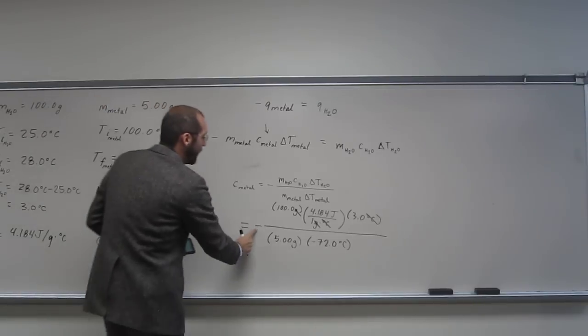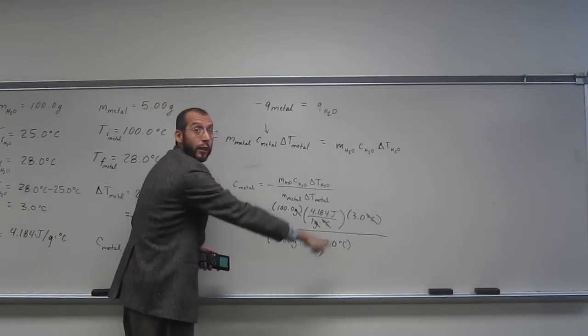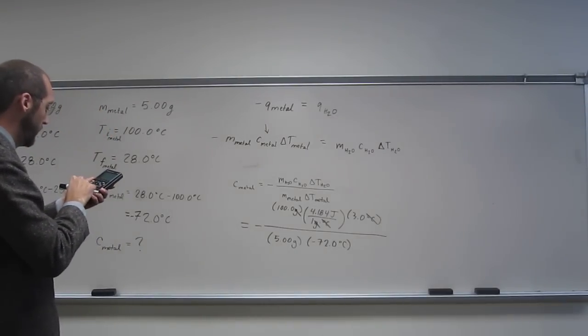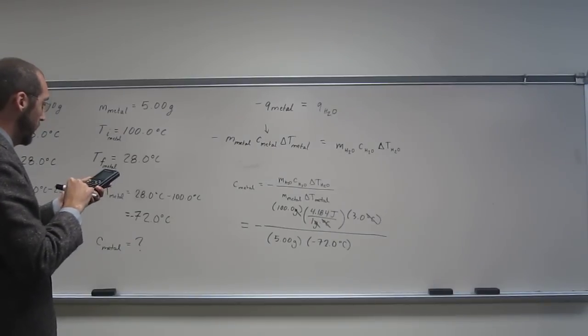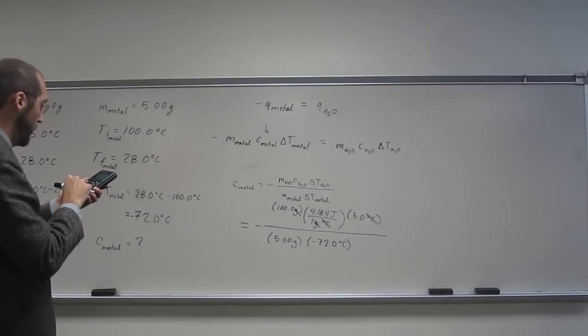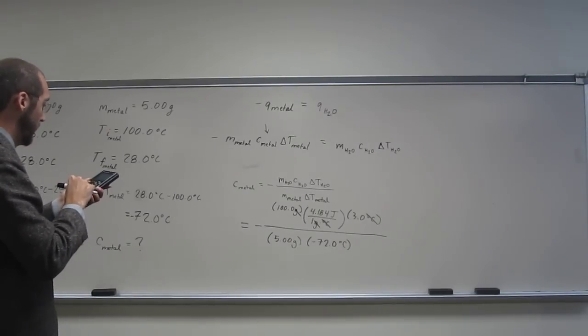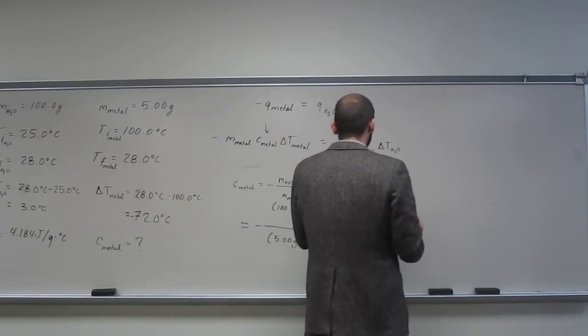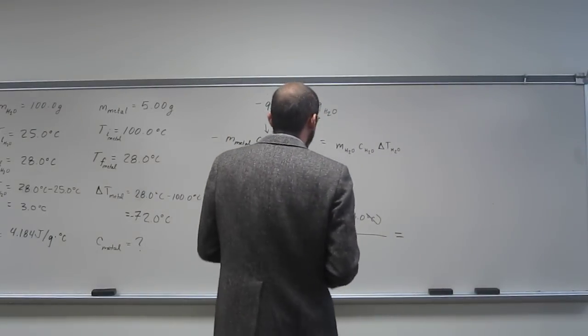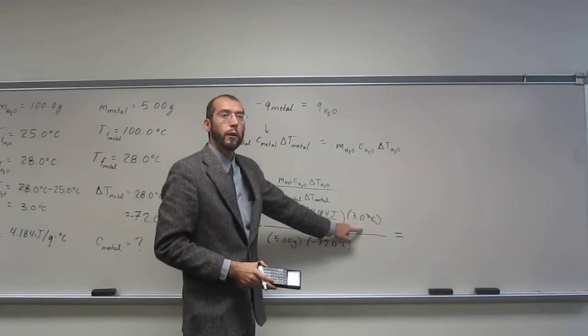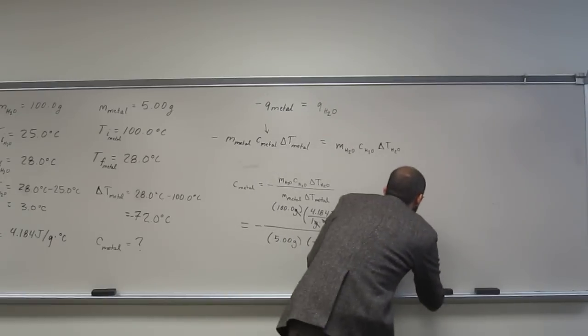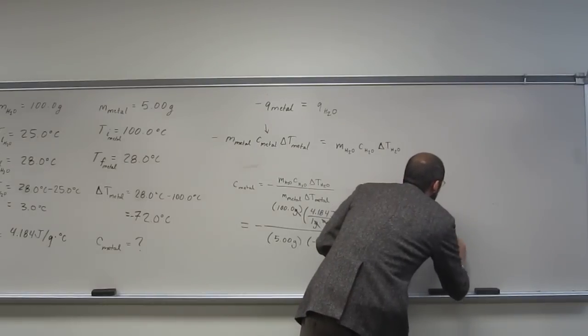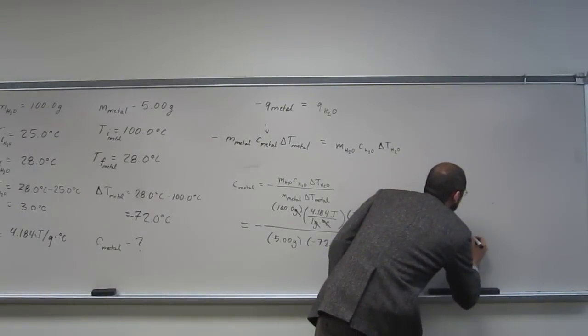So negative times a negative down here, the whole thing is going to be positive now. So 100 times 4.194 times 3 divided by 5 divided by 72, and the number I got for the specific heat capacity of this metal, it's got to be two sig figs because of this number here. It's going to be 3.5 joules per gram degrees Celsius.